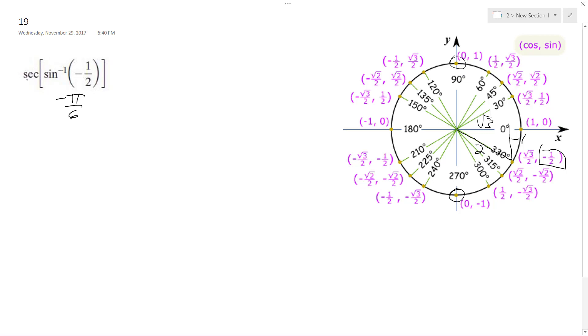So it's essentially the secant of negative pi over six. Secant's the same thing as one over cosine. So if it helps, I do one over cosine pi over six,